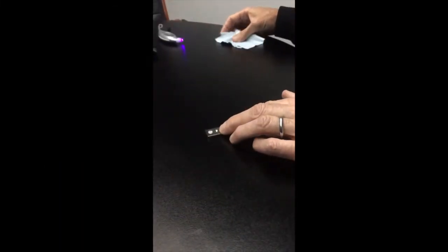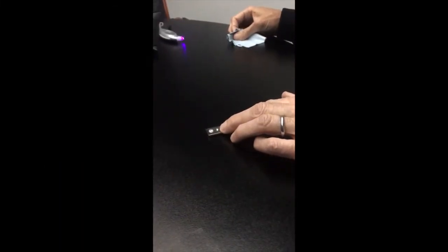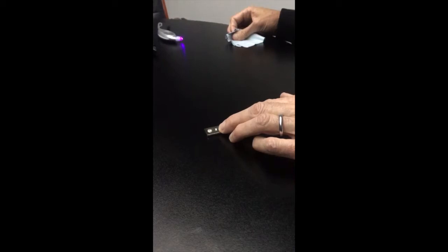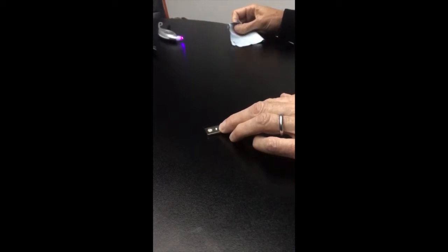This is a sample of the new moissanite. It's called Forever One and it's DEF in color. It's much wider and also has fewer inclusions, so it's very difficult to identify by sight.